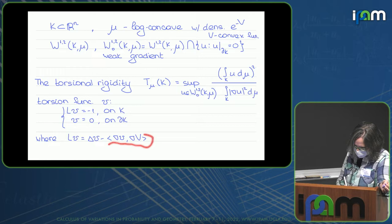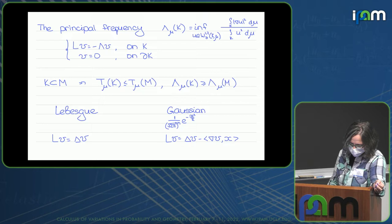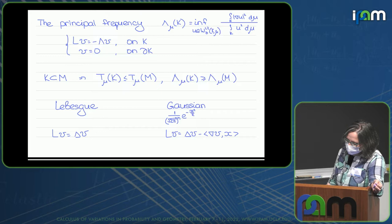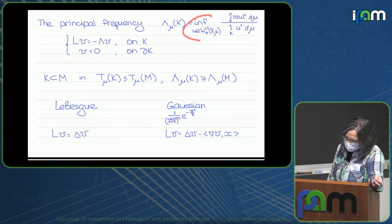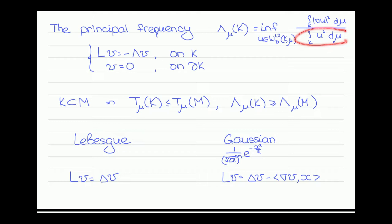So the operator L is the Laplacian minus the scalar product of two gradients. Another definition we will need is the definition of principal frequency. Again, the principal frequency of domain K is defined with respect to measure mu as the infimum over all functions U vanishing on the boundary of K of the ratio of the integral of the square of the gradient of U to the integral of the square of U. The principal frequency is also known as the first eigenvalue of the differential equation LV equals minus lambda V, with eigenfunction V vanishing on the boundary of K.